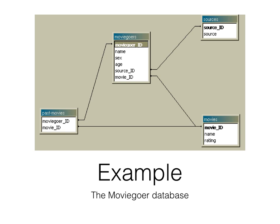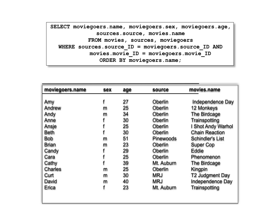Here's a simple example using four tables about movies. We have a moviegoers table with name, sex, and age; a past movies table with IDs linking moviegoers to movies; a movies table with movie ID, name, and rating; and a sources table indicating where moviegoers live. An SQL statement extracts data giving us moviegoers' gender, age, location, and the movies they saw.